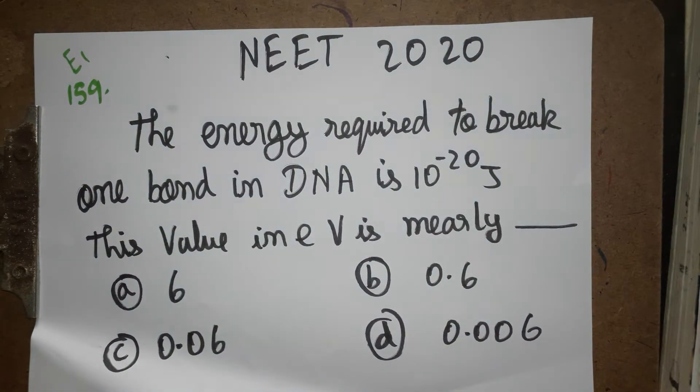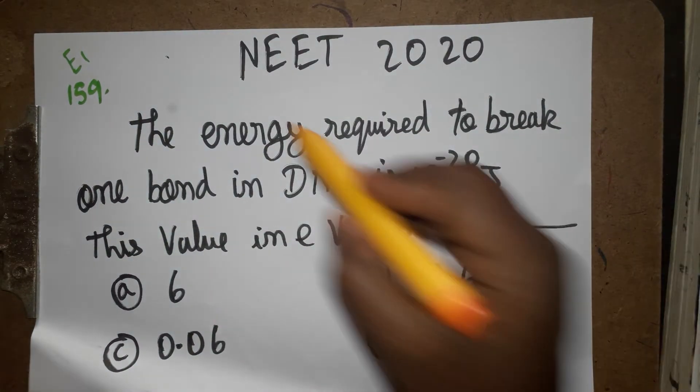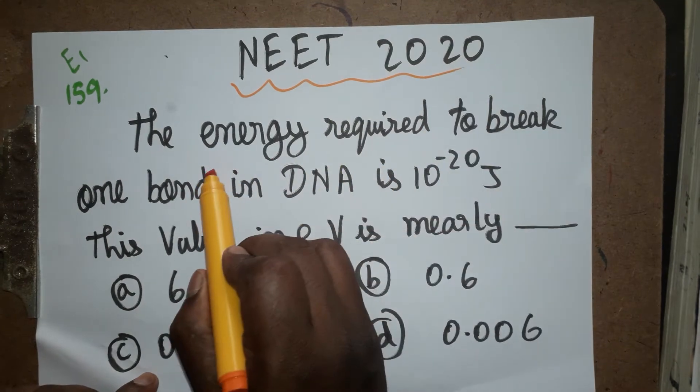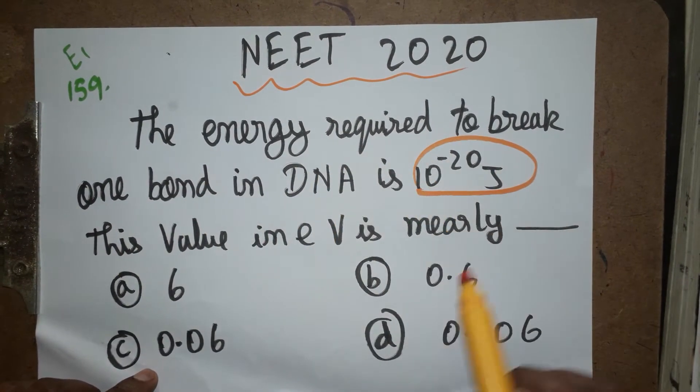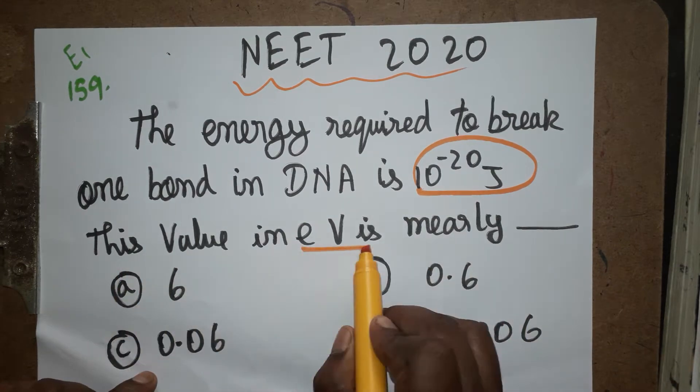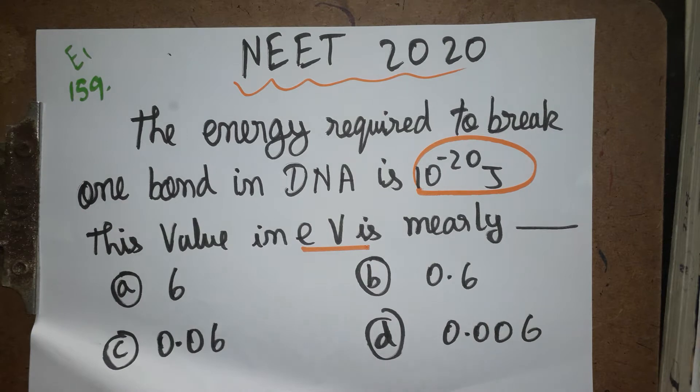Hello students, today we are going to solve a NEET question from the 2020 paper. The question states: the energy required to break one bond in DNA is 10^-20 joules. They want this value in electron volts (eV). Very simple question. First of all, you need to know